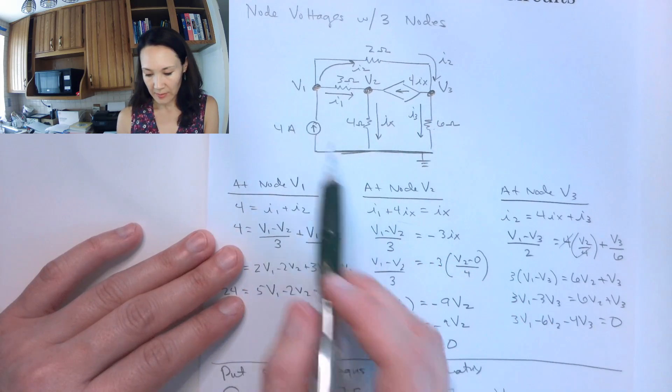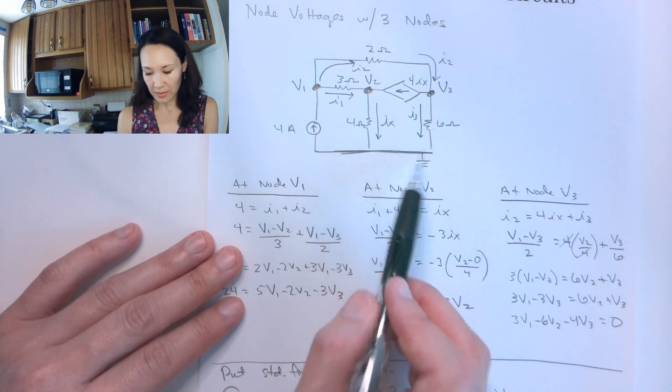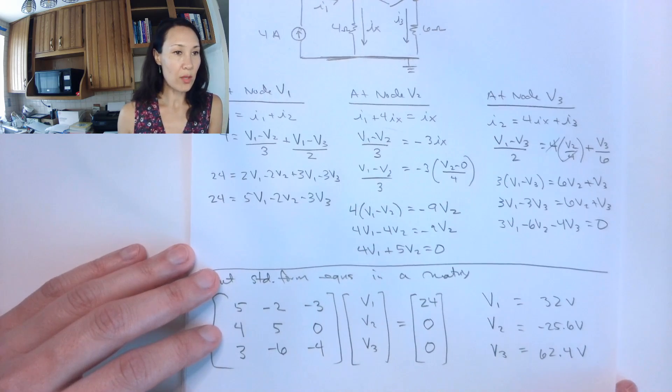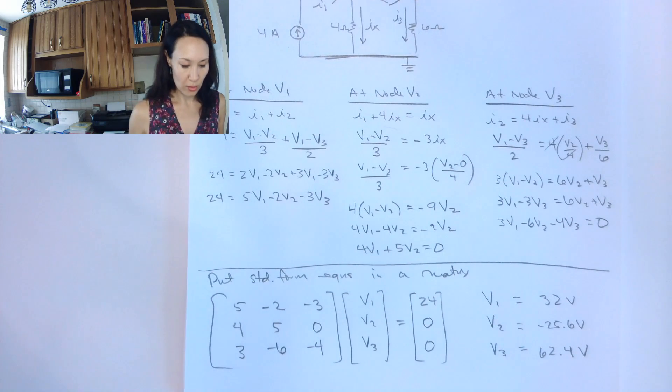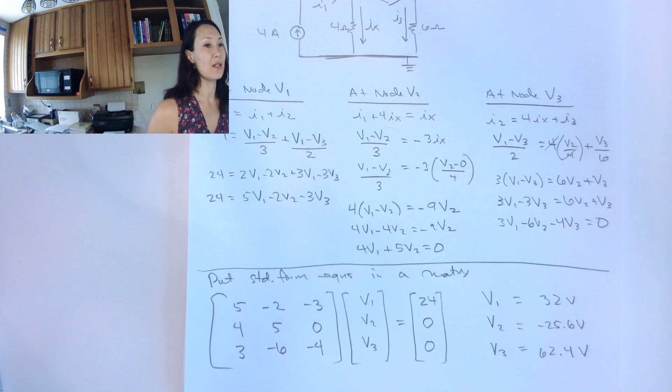And these are all with respect to our reference node ground being 0. So let me know if you have questions about this and doing row reduce echelon form. You can use MATLAB or Octave if you like, or you can use this online calculator. It's fine, too. Okay, thanks.